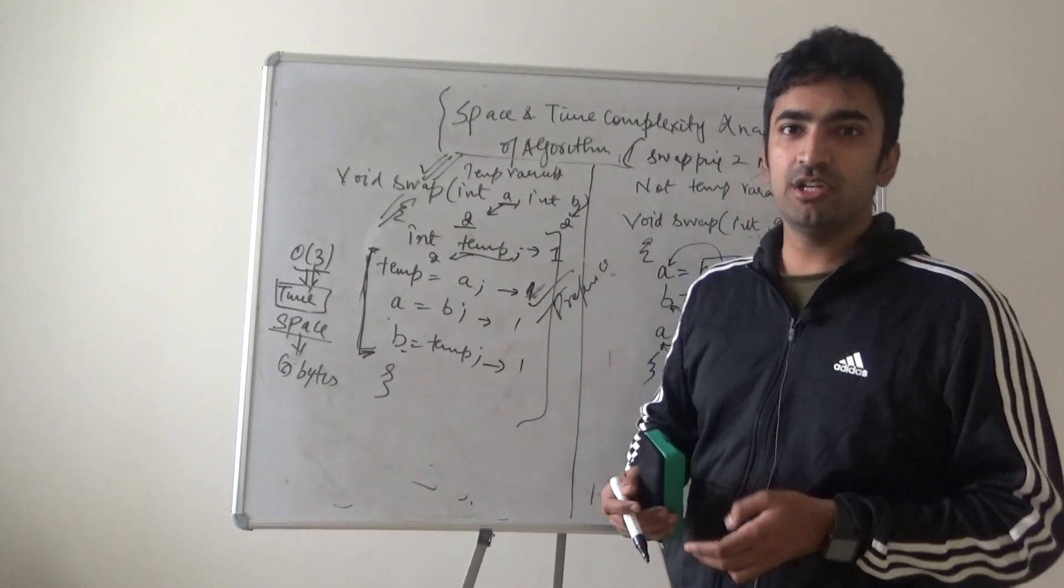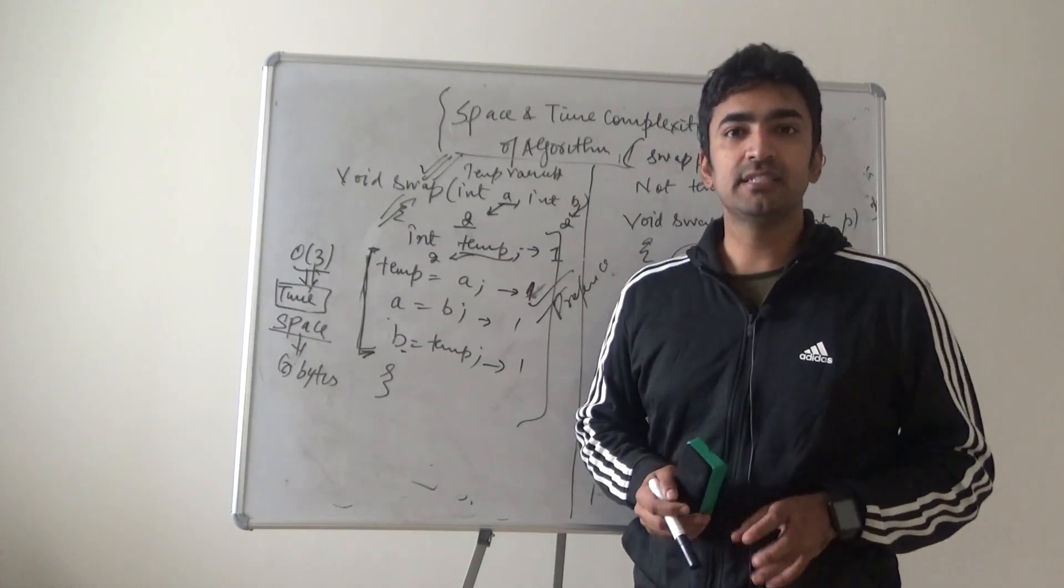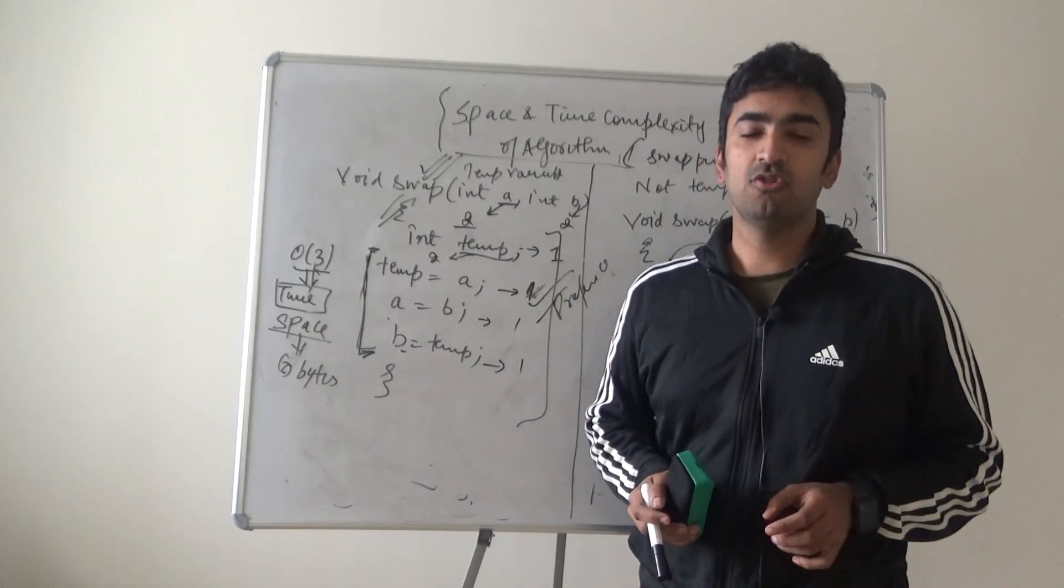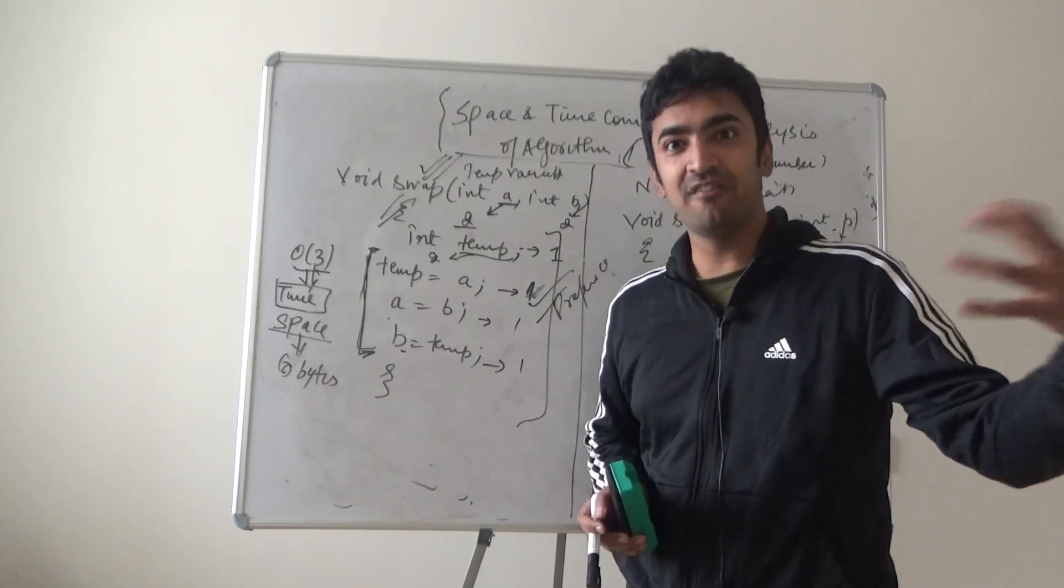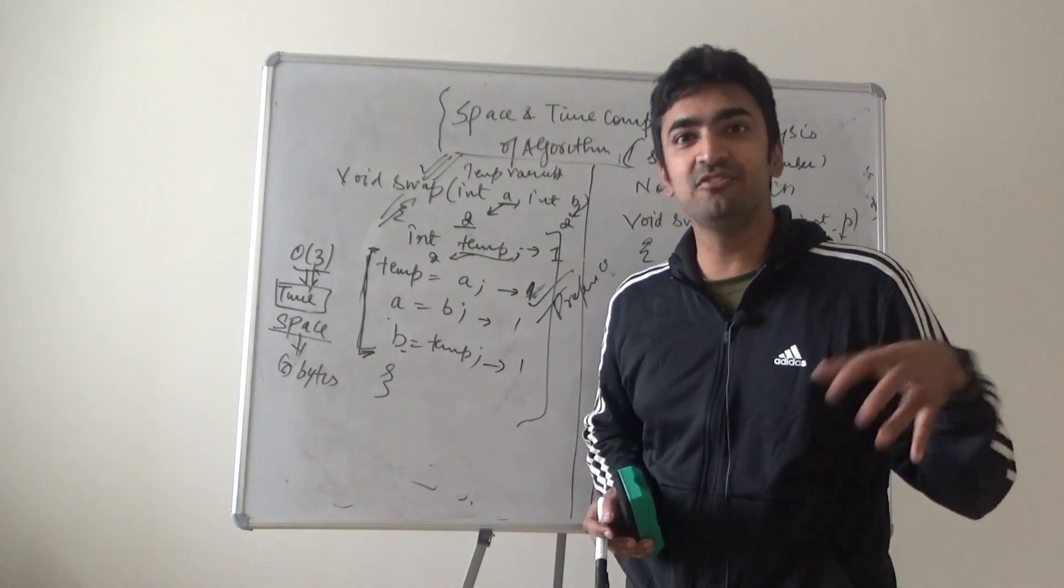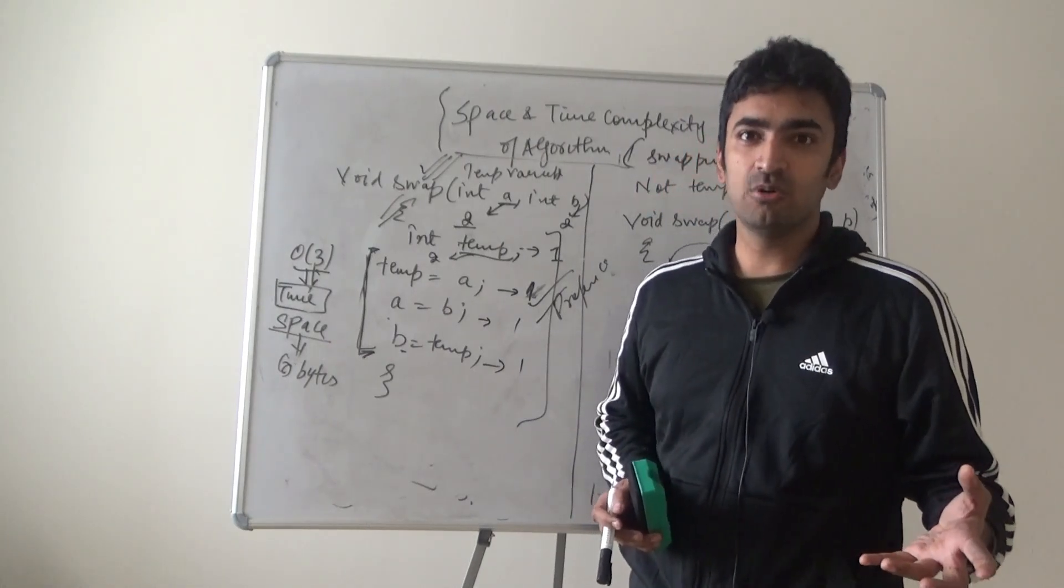So, as a programmer, you should give the preference to time complexity than space. So, it is always a trade off. If you can have more time, you have less space, you have more space, you have less time. So, that's how it works out.